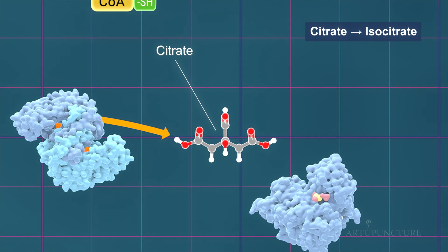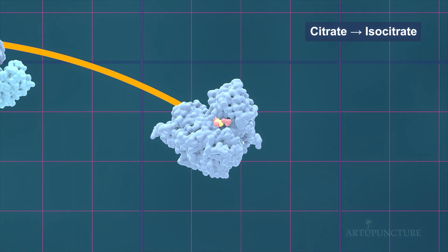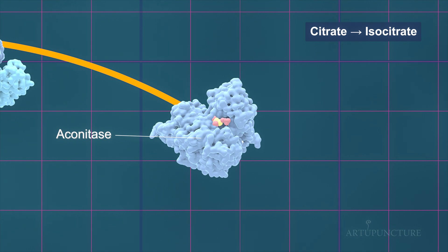Citrate is transformed into isocitrate through an isomerization reaction, facilitated by the enzyme aconitase with the assistance of an iron-sulfur cluster.